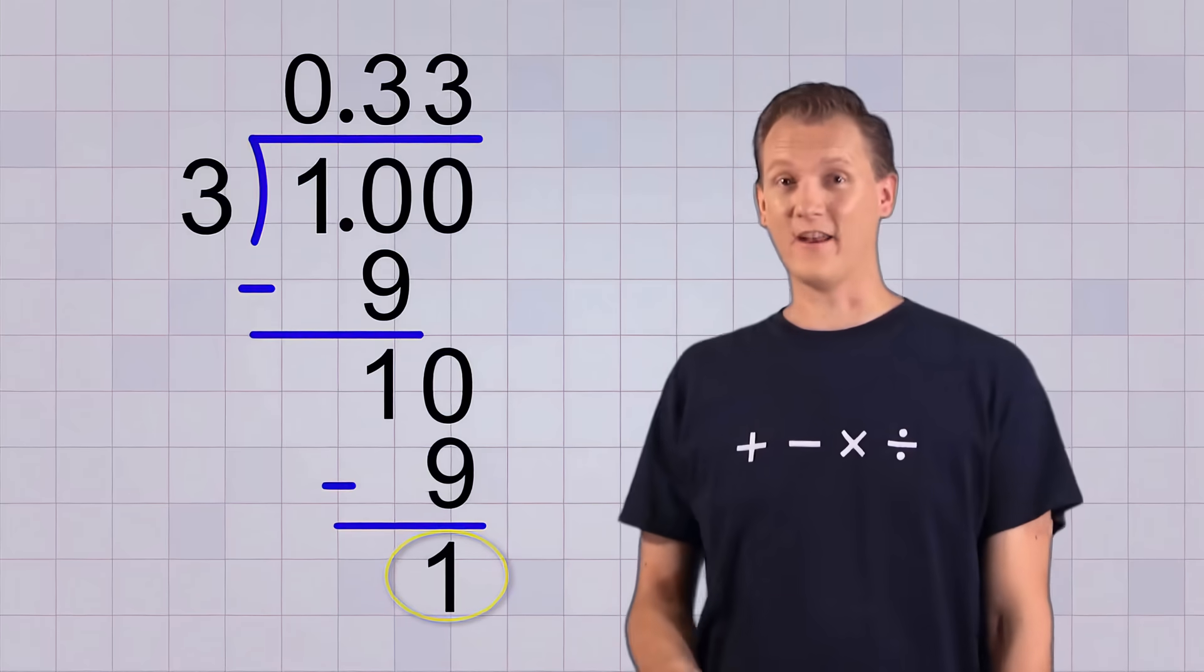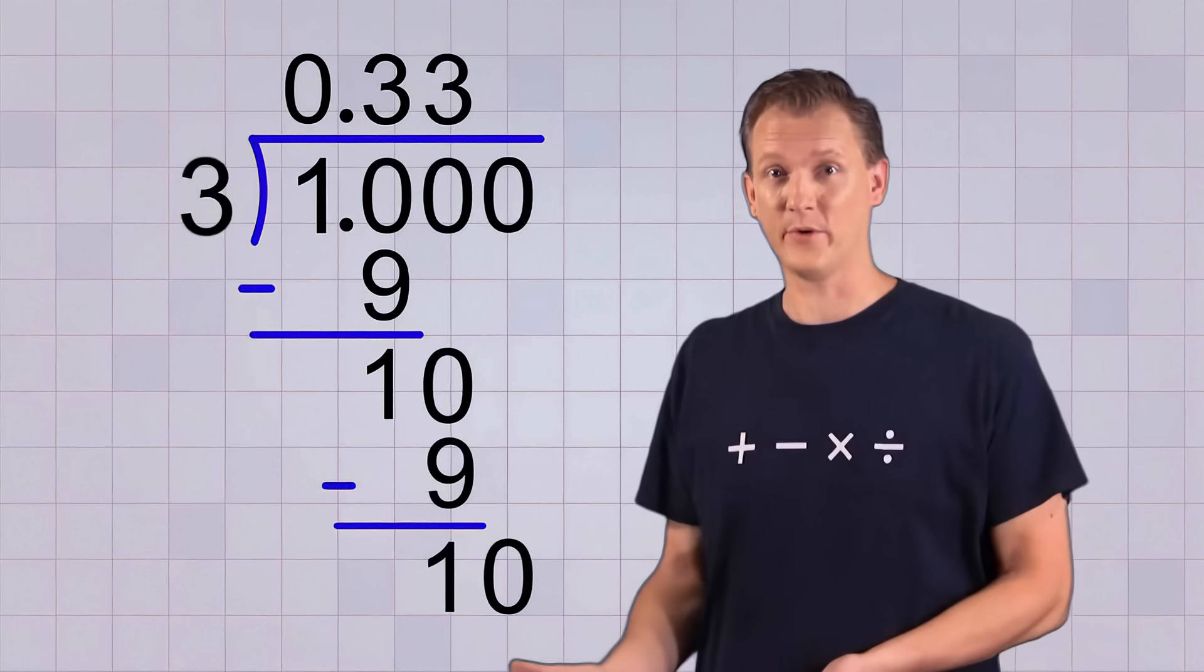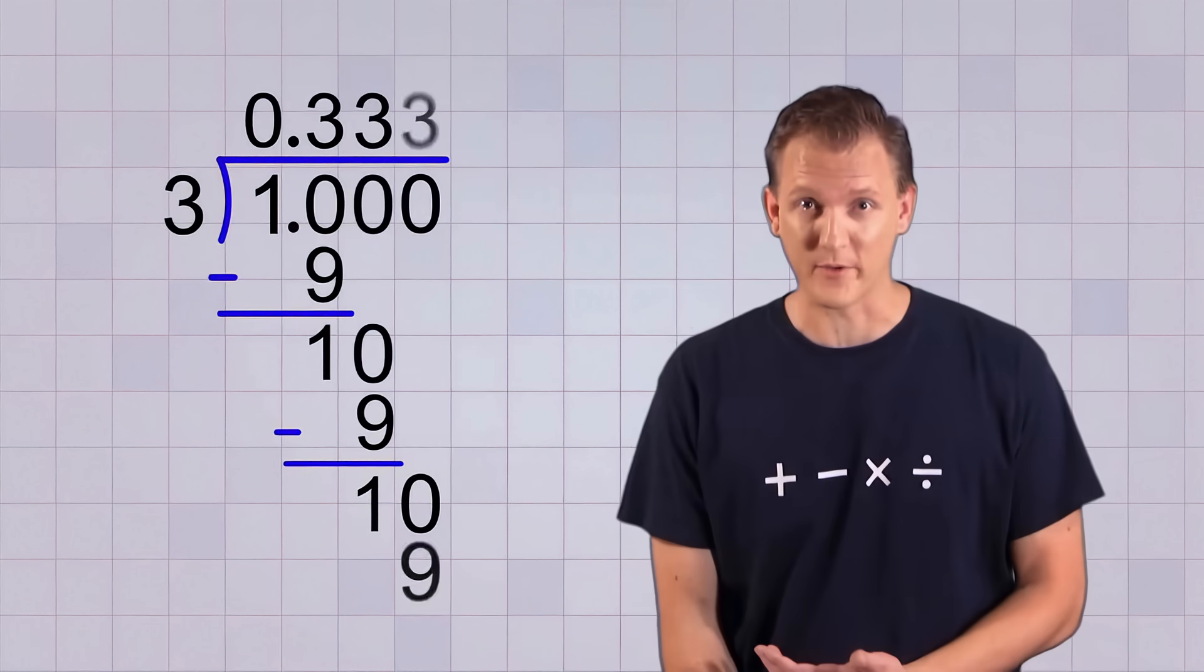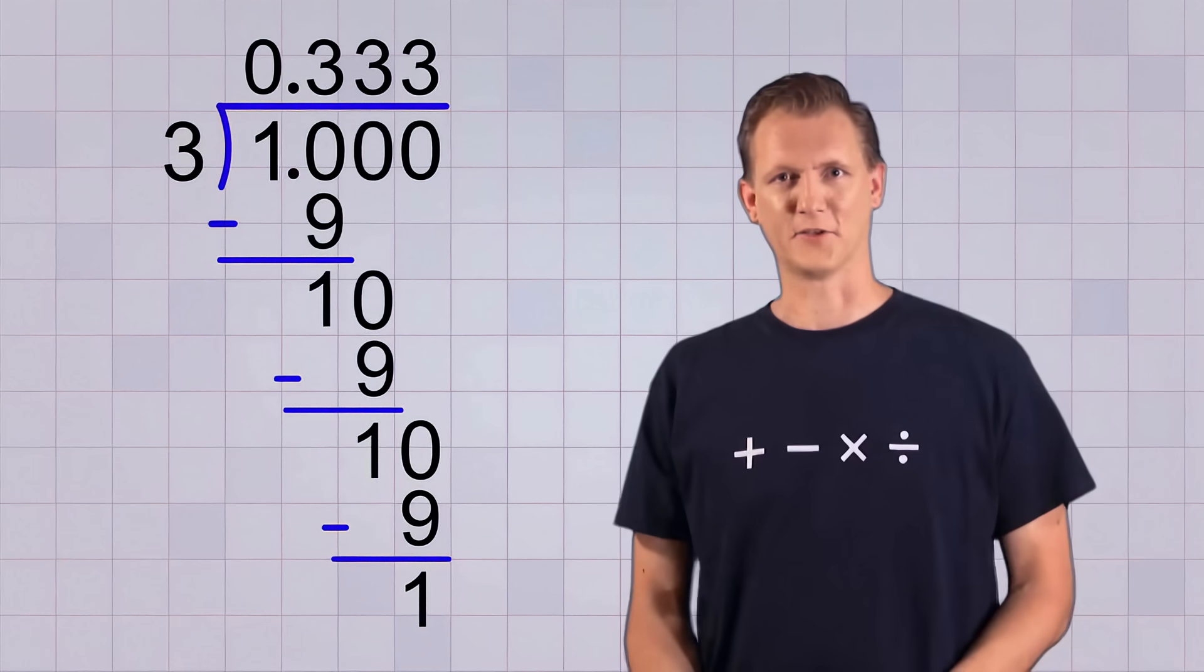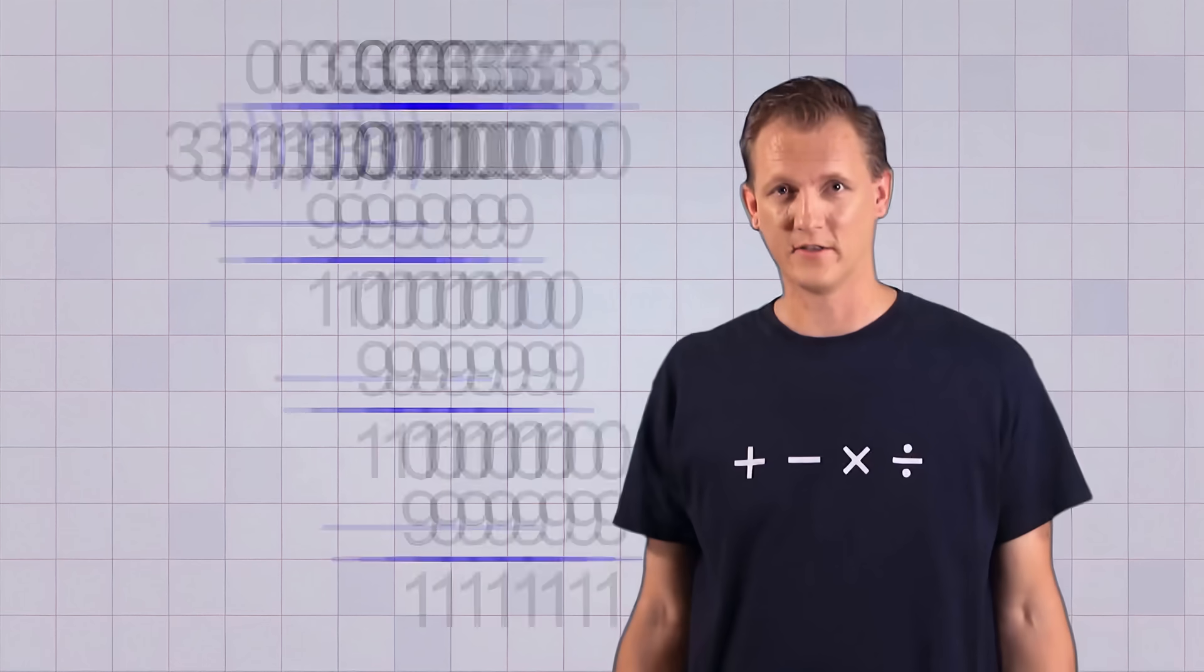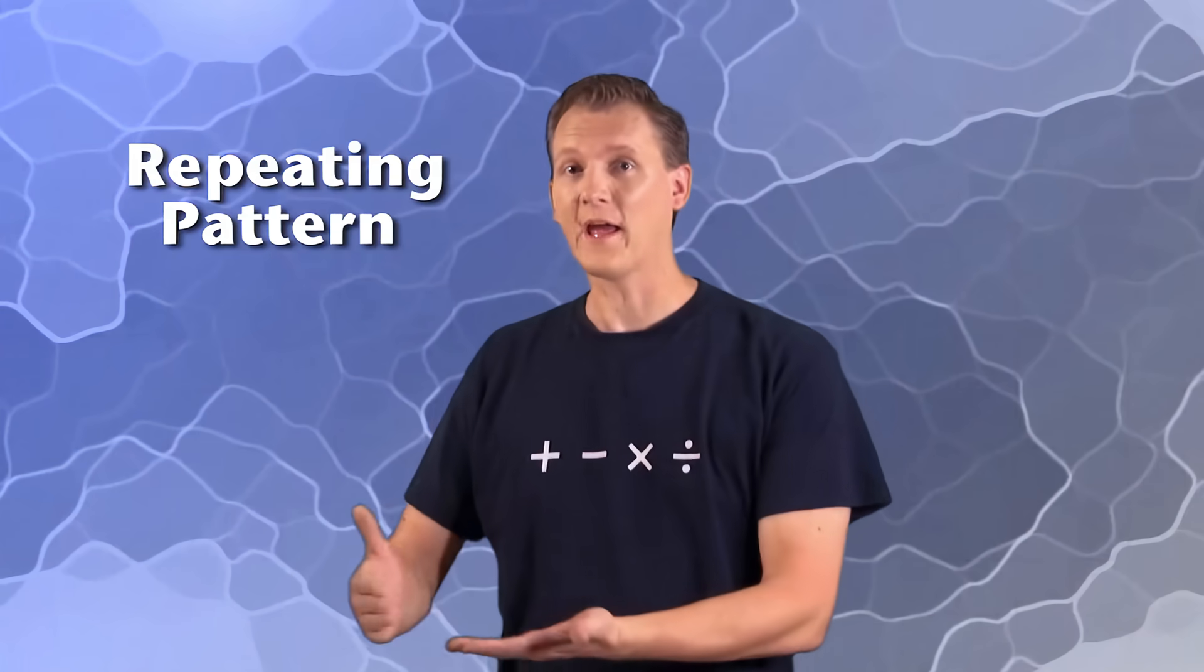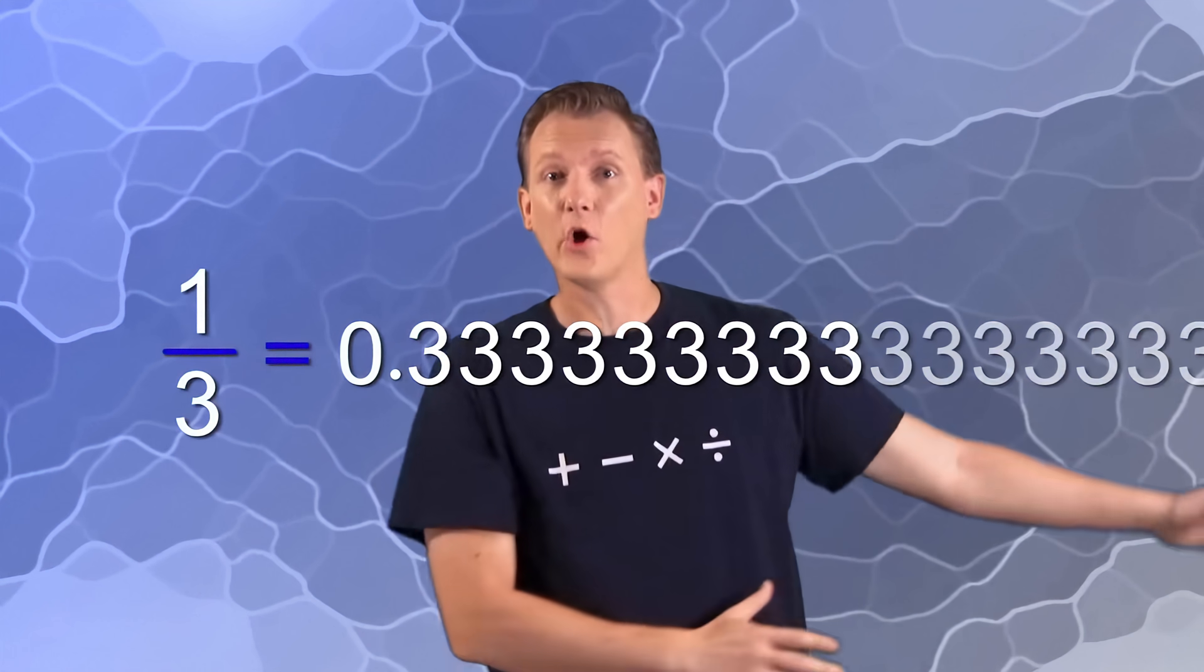Well it looks like we're going to need another 0. But that's just going to give us 10 divided by 3 again, which is going to give us another remainder of 1. Well, this looks like it might keep on going forever. Some fractions are like that. If you divide them, you'll see a repeating pattern of numbers that continues on forever.